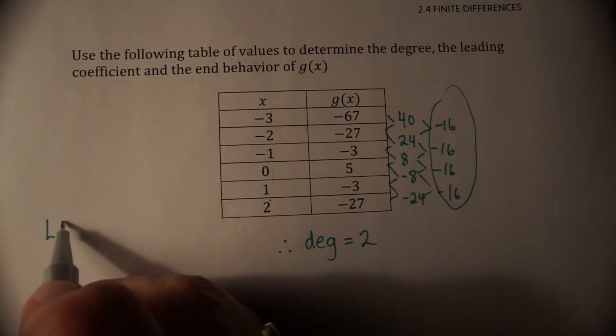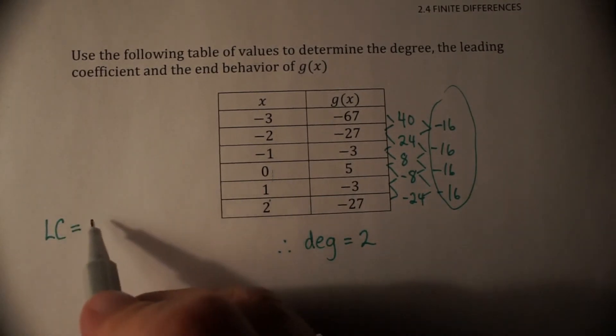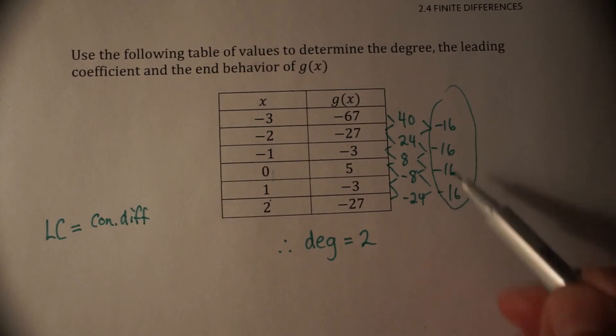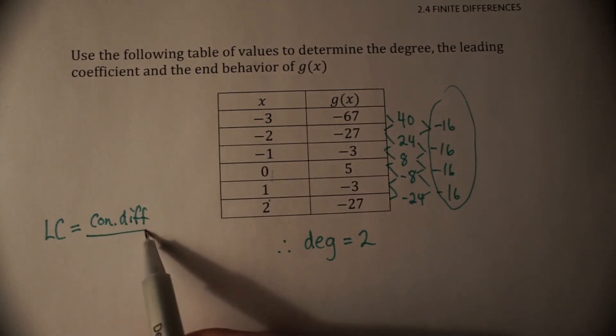And the formula is this. The leading coefficient of our polynomial will be equal to the constant differences. So in this case, our constant differences were negative 16.